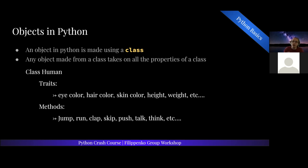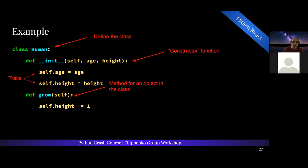And then every human has methods. A method is kind of like an action or a function that a human can do. A human can jump, run, clap, skip, push, talk, and think — these are things that a human object should be able to do. They're basically verbs — functions that a human object should be able to do. We call those methods. So jumping and running and clapping belong to the human class object. To create a human object, they need to be part of this human class.